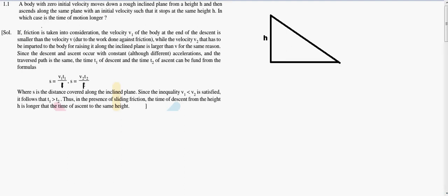Hello friend, let's see the solution of Irodov question number 1. In this question, a body with zero initial velocity moves down a rough inclined plane from a height h.